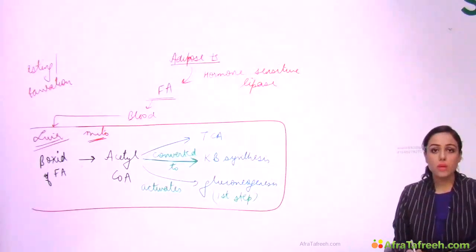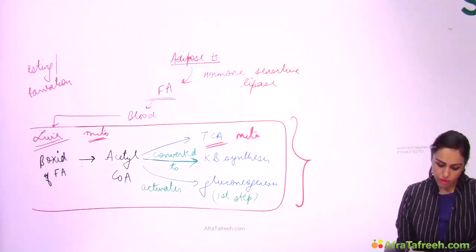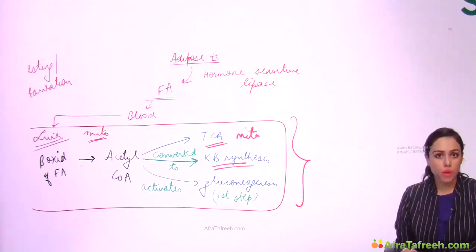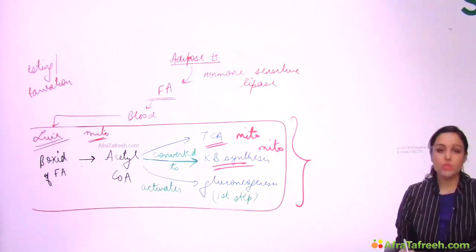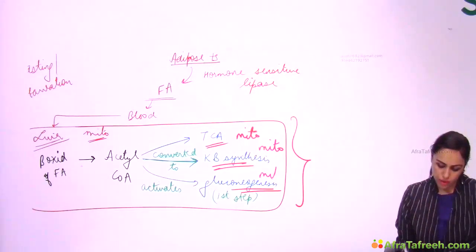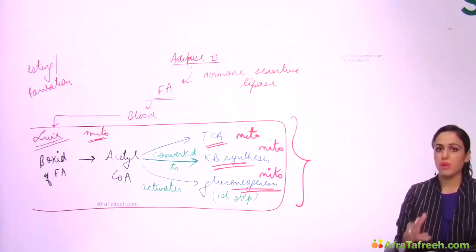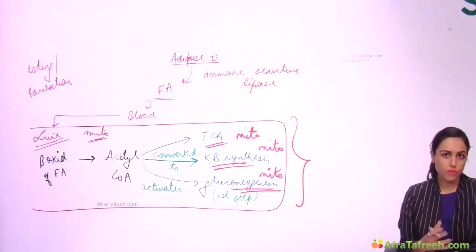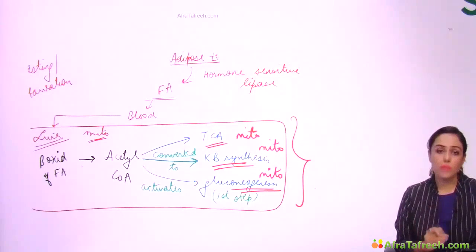Regarding compartments: TCA occurs in mitochondria, ketone body synthesis is a catabolic pathway so it also occurs in mitochondria, and gluconeogenesis occurs in both mitochondria and cytoplasm but starts from mitochondria. So the first step of gluconeogenesis occurs in mitochondria. You can use the compartment formula I gave earlier — no need to cram, just follow the concepts.